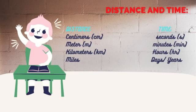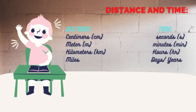Here is the chart between distance and time. Distance in centimeters, time in seconds. Distance in meters, time in minutes. Distance in kilometers, time in hours. Distance in miles, time in days and years.